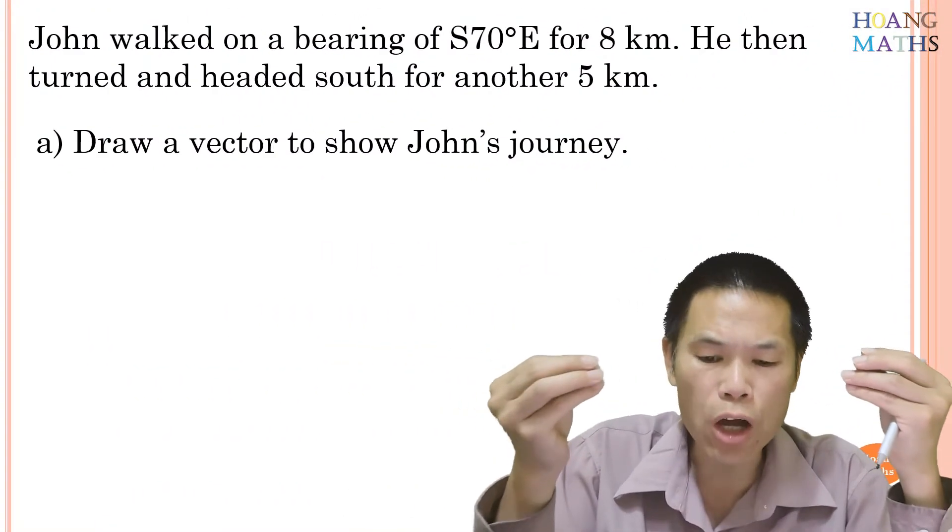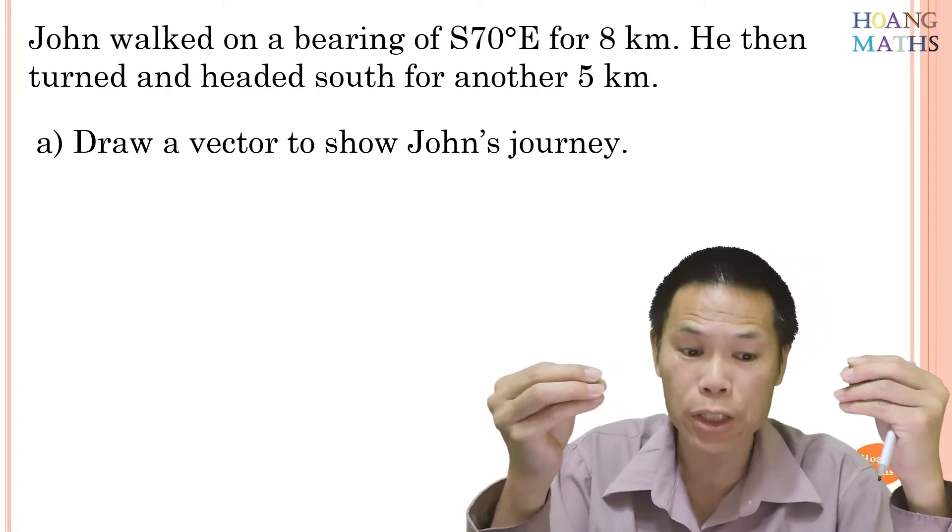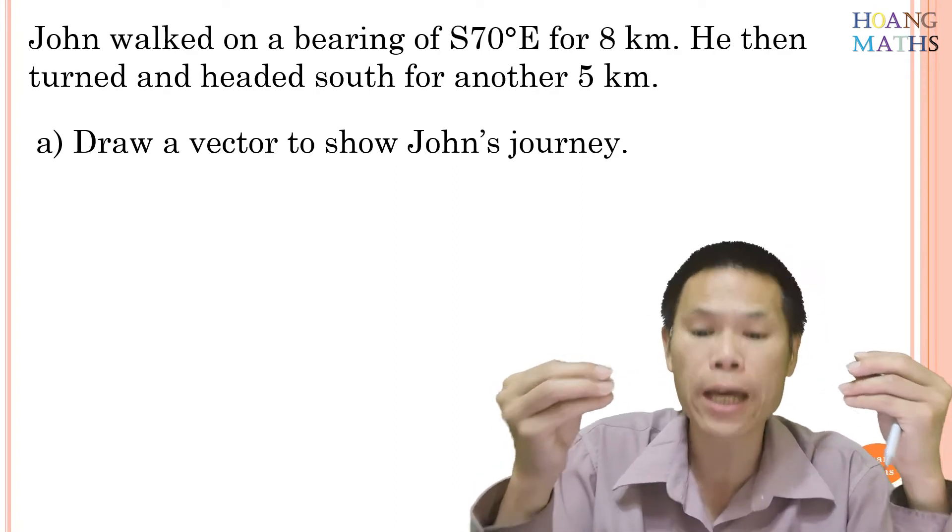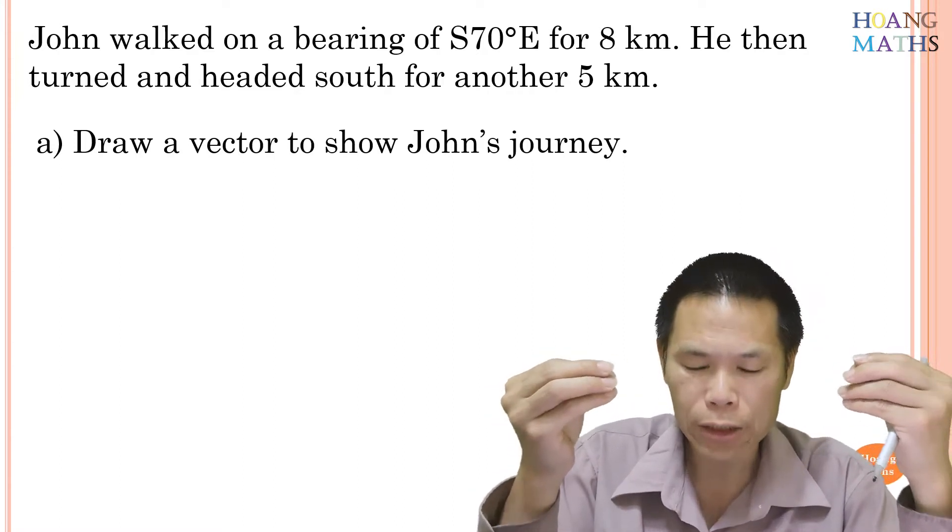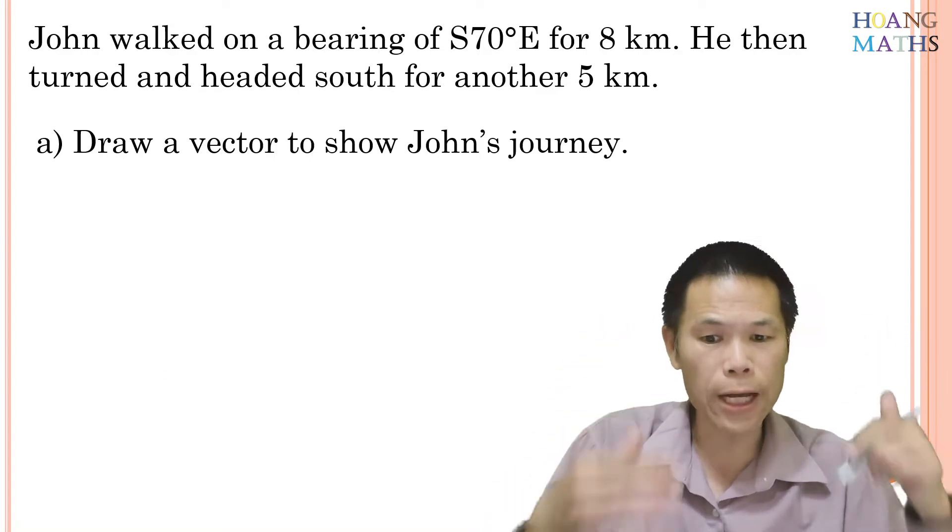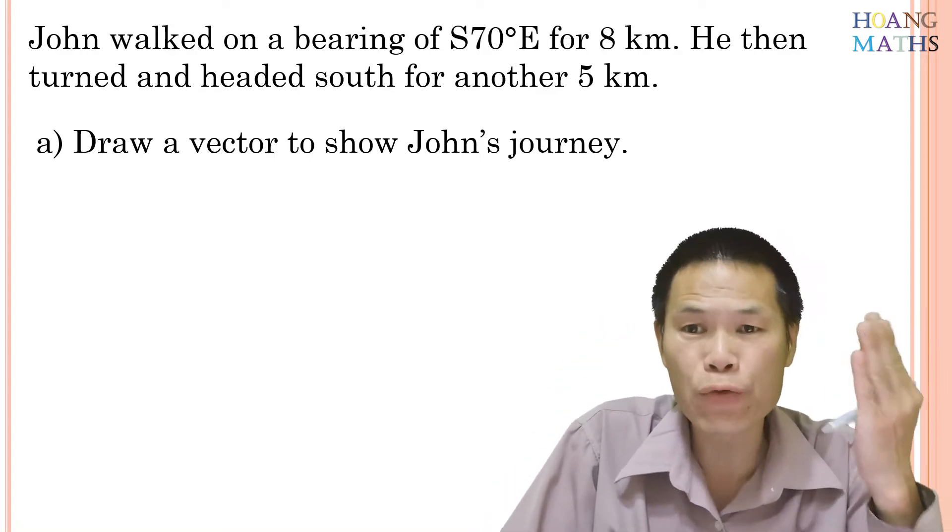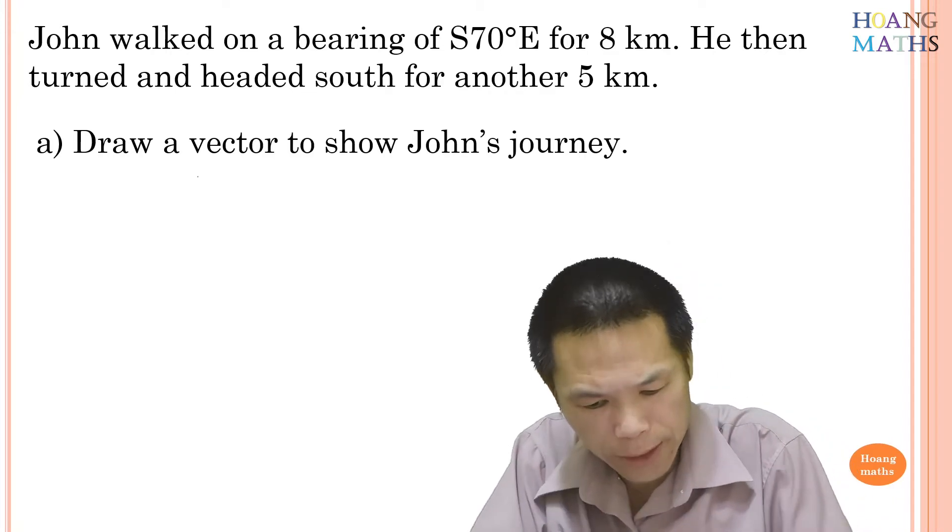For example, John walked on a bearing of south 70 degrees east for 8 kilometers. He then turned and headed south for another 5 kilometers. Part A: draw a vector to show John's journey. So to draw a vector, first of all we have to start with a reference point first.